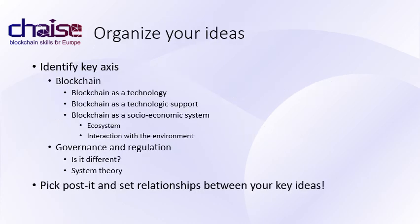Brainstorming is not so obvious. You can organize your key ideas based on main axes regarding the Blockchain, which you can consider as a technology, a technological support for applications, or a socio-economic system. You may also pay attention to governance and regulation. For each idea you have, pick a post-it, write your idea on it, then put it on the sheet of paper and draw relationships between your post-its. You will have, by this way, your first cognitive map or mind map about these key ideas. At the end of this lecture, try to adjust this post-it-based organization and check if it answers your key questions.